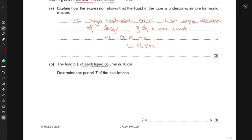Next, we have that the length L of each liquid column is 18 centimeters. Determine the period of oscillations.